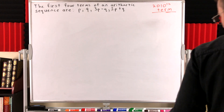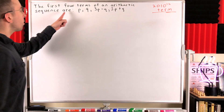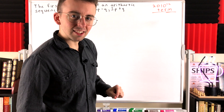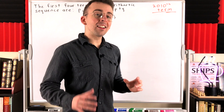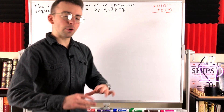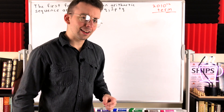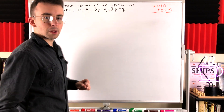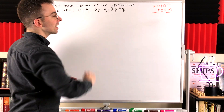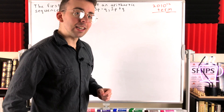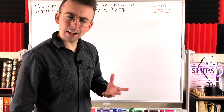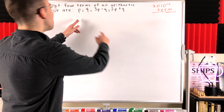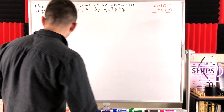Let's do it. We've got the first four terms of an arithmetic sequence: P, 9, 3P minus Q, and 3P plus Q in that order. We want to find the 2010th term of the sequence. The game plan is: we want to use this information about the arithmetic sequence to solve for the first term P, and to solve for the common difference between consecutive terms of the sequence. Then we can just add that common difference to the first term 2,009 times in order to get all the way to the 2010th term. If you're familiar with arithmetic sequences, then you know this is a lot of information here to work with.